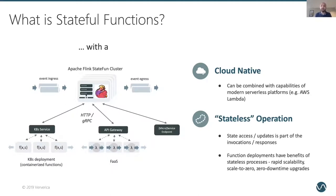Distributed stateful applications implemented using Stateful Functions can seamlessly take advantage of modern serverless platforms like AWS Lambda or Kubernetes deployments — giving you operational benefits like rapid scalability, scale to zero, and zero downtime upgrades. A Stateful Functions application uses a Flink cluster for message routing and state management, while allowing the actual functions containing application logic to be deployed on a separate compute tier. The runtime keeps logical co-location of compute and state for consistency while physically separating deployment. The physical compute layer operates as a stateless service because all state accesses and updates are integrated as part of function invocation requests and responses.